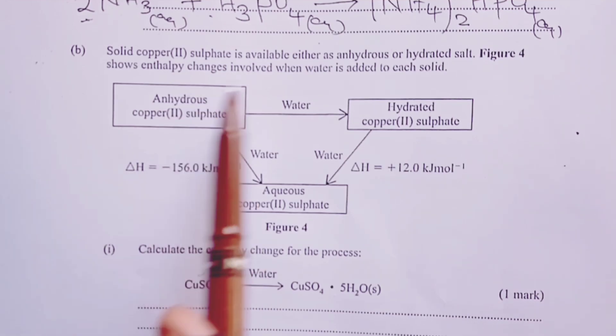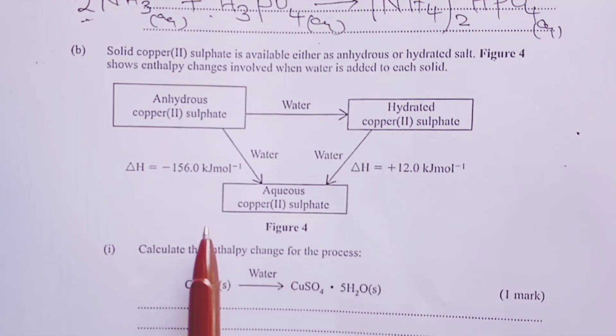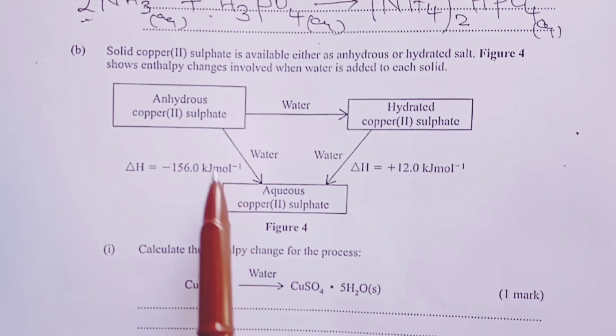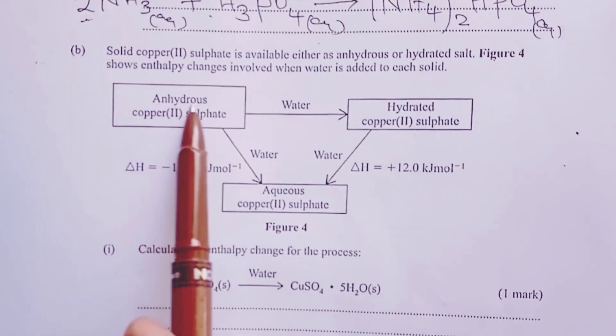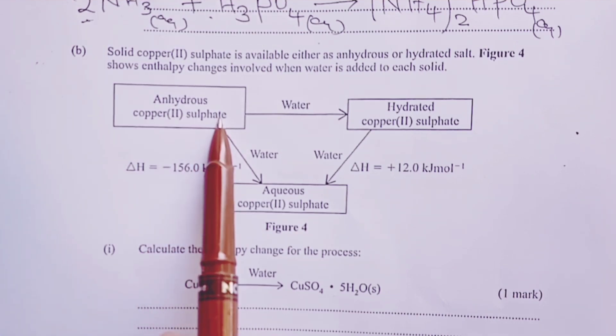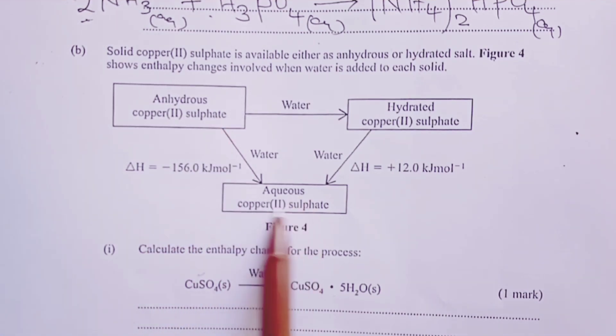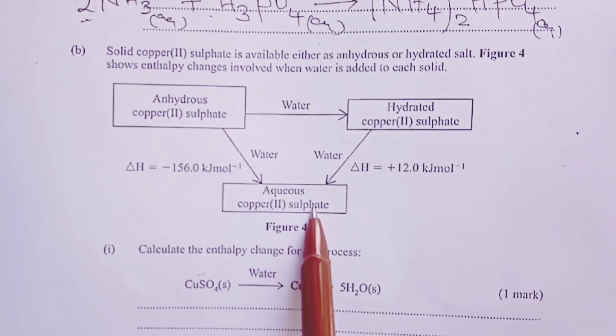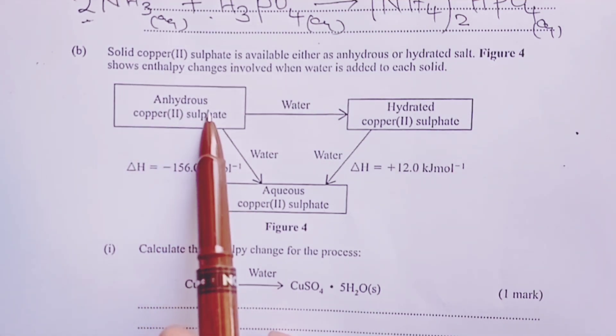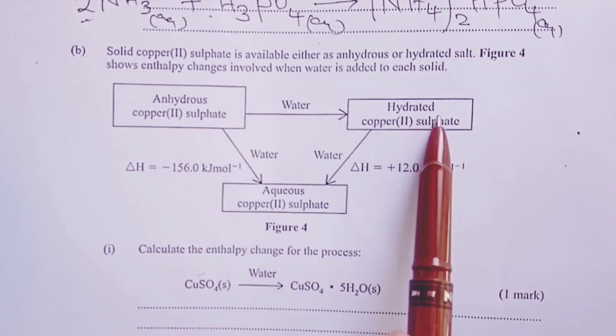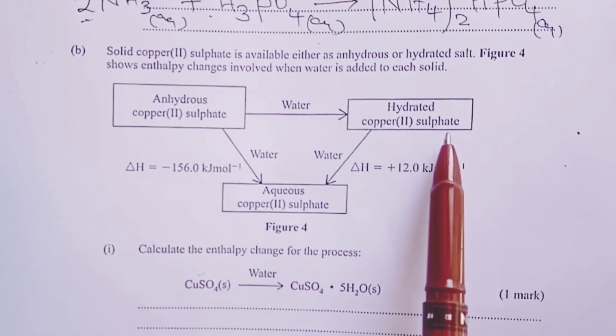We have been given an energy cycle diagram here where we can start with anhydrous copper(II) sulfate to get aqueous copper(II) sulfate directly. Or we can obtain aqueous copper(II) sulfate from the anhydrous copper(II) sulfate via our hydrated copper(II) sulfate.